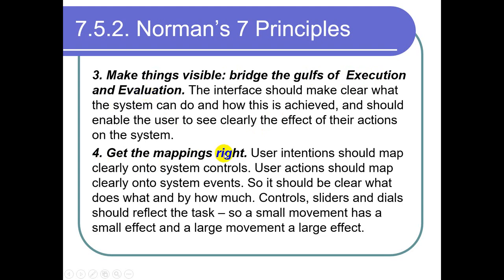Principle 4: Get the mappings right. Whenever a user interacts with the system, the controls tell them what they can do. Use radio buttons where appropriate and checkboxes where appropriate — map the controls correctly. User intention should map clearly onto system controls, and user actions should map clearly onto system events. For example, a left click does this, a right click does that — it must be clear what does what.